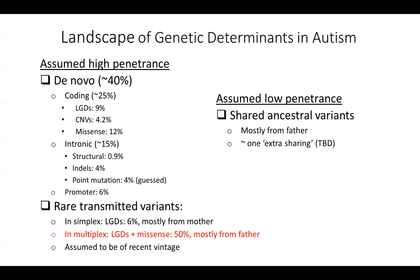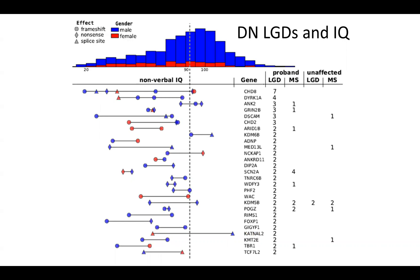Now it's time to acknowledge that all the work I presented so far treated autism as one binary thing — either a kid has autism or does not have autism. We were able to list variants in genes that increase the risk of this single discrete diagnosis. But as I mentioned in the introduction, kids with autism are not alike.